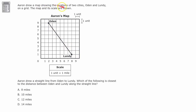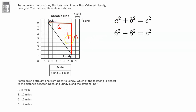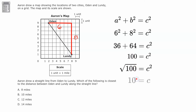Aaron drew a map showing the location of two cities, Odin and Lundy, on a grid. He drew a straight line from Odin to Lundy. Recognizing this as a coordinate plane, we can form a right triangle and use the Pythagorean theorem. The horizontal leg is 8 units and the vertical leg is 6 units. So 6² + 8² = 36 + 64 = 100, and the square root of 100 is 10. The straight-line distance from Odin to Lundy is 10 miles.